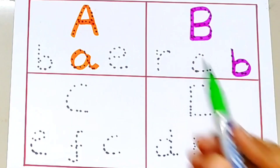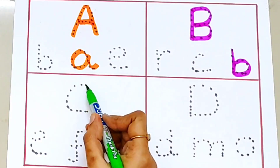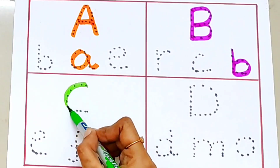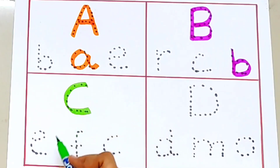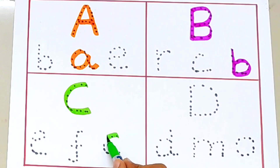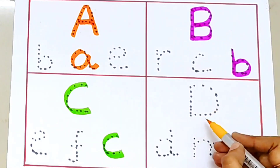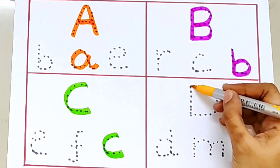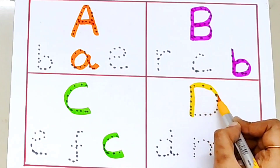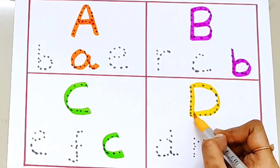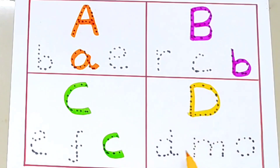Small b. Capital C. C for cat. Let's find small c. Capital C. Small c. Capital D. D for donkey. Small d.